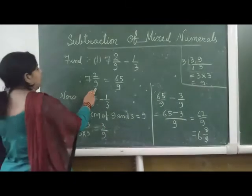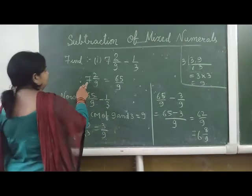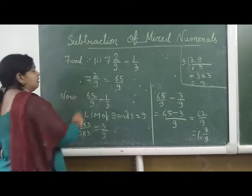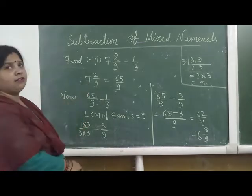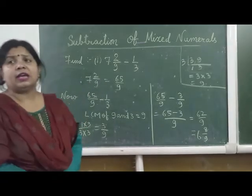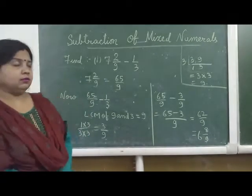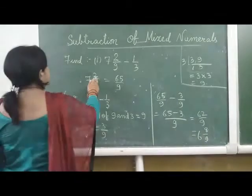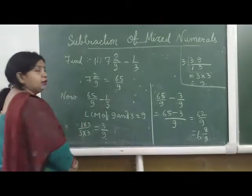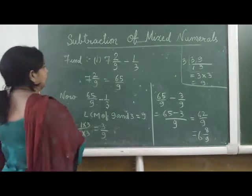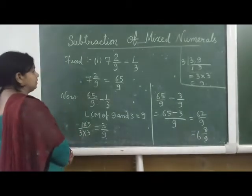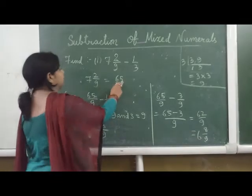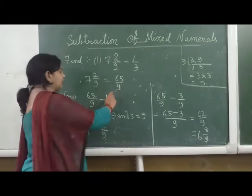First we multiply 9 by 7 to get 63, then we add 2 to get 65. So we will get 65 by 9.